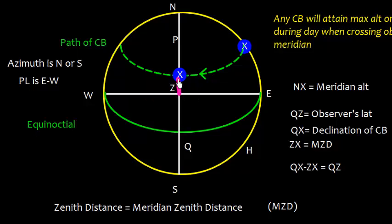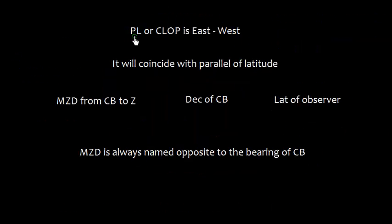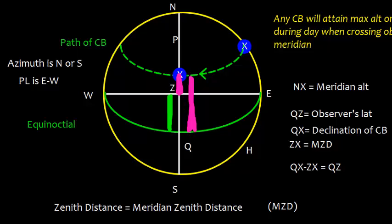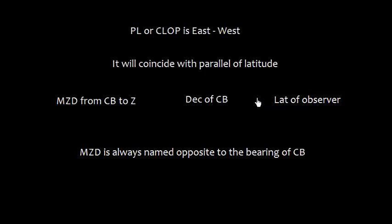The zenith distance and the declination allow us to easily obtain the observer's latitude. The position line, or celestial line of position, is an east-west line coinciding with the parallel of latitude. If we have the meridian zenith distance and the declination of the celestial body, we can find the latitude of the observer. It should also be noted that the meridian zenith distance is always named opposite to the bearing of the celestial body.